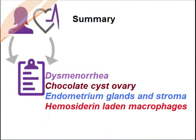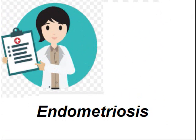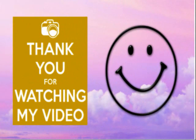To summarize endometriosis: there is dysmenorrhea, chocolate cyst of the ovary, endometrial glands and stroma present in the wall of the cyst, and hemosiderin-laden macrophages. Combining all the information, we can comfortably diagnose the lesion as endometriosis. Accumulation of blood leads to the chocolate cyst.